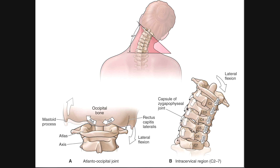So we see upsloping on the left and downsloping on the right when laterally flexing to the right. If we laterally flex the other way, it would just flip.